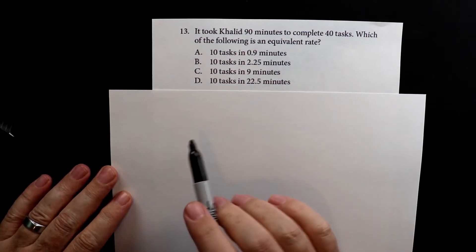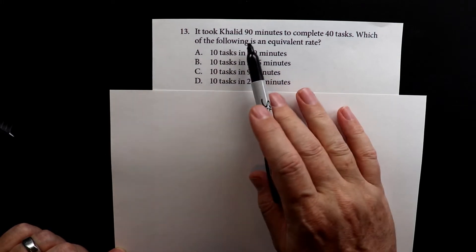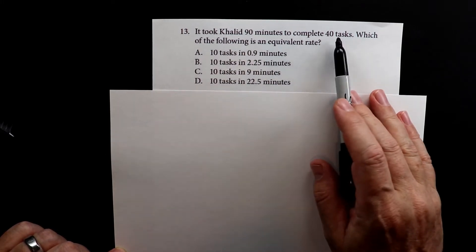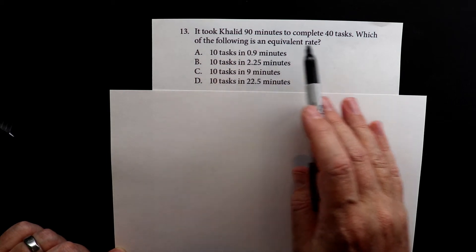This is number 13 for test two of the Accuplacer. It took Kaled 90 minutes to complete 40 tasks. Which of the following is an equivalent rate?